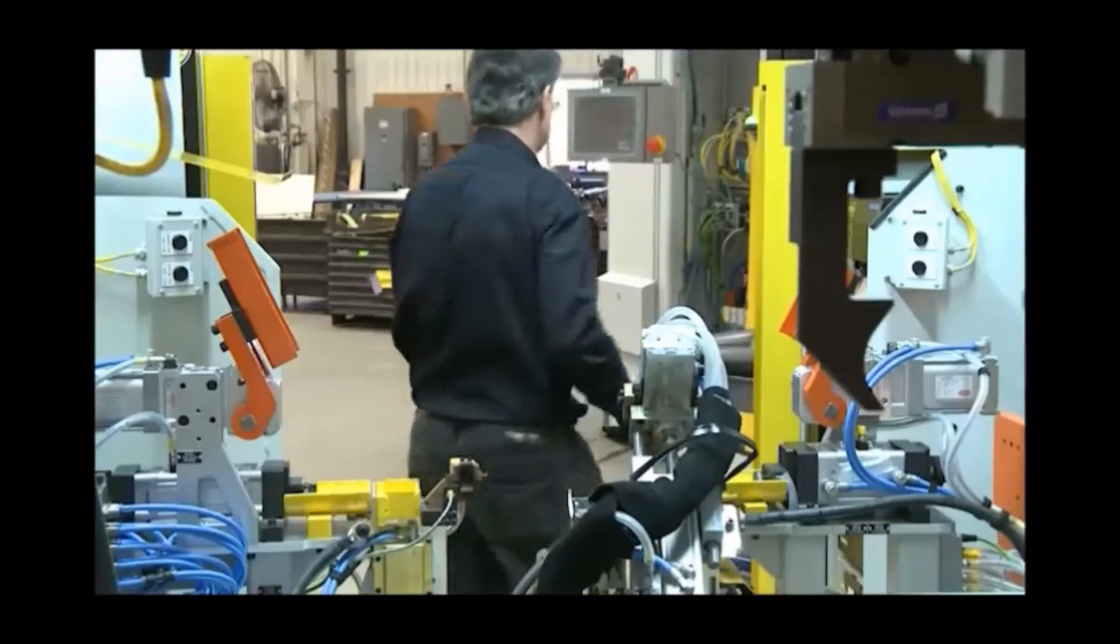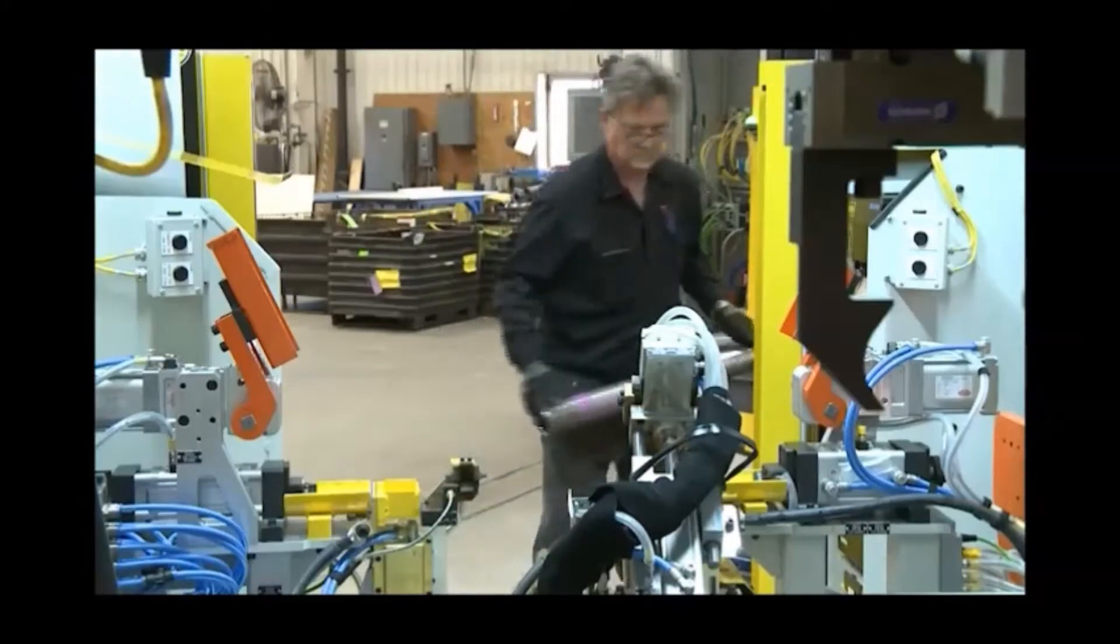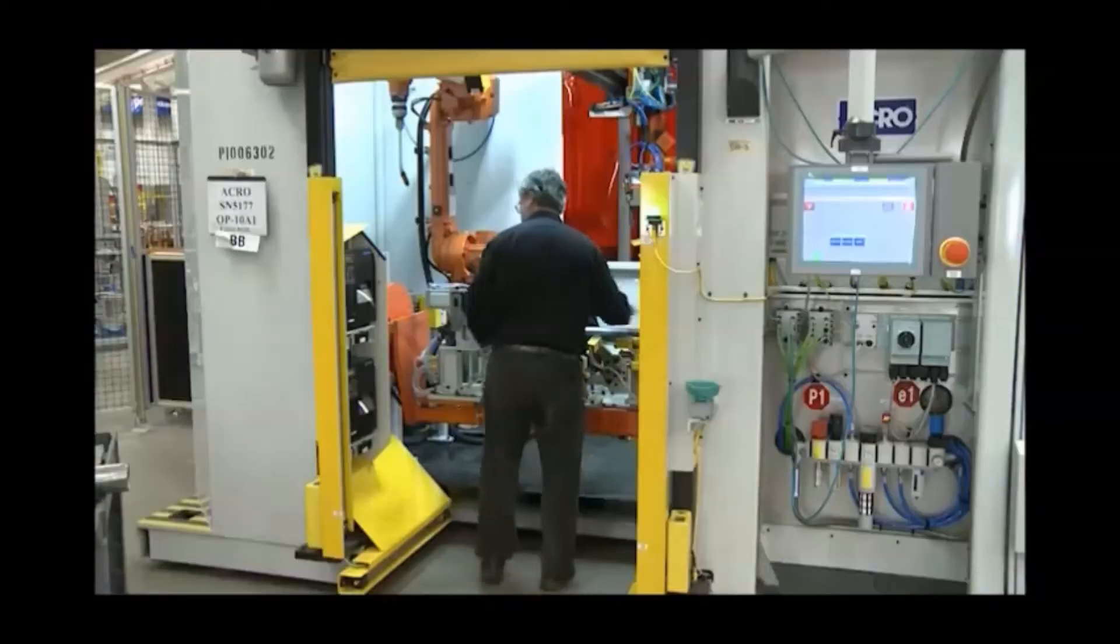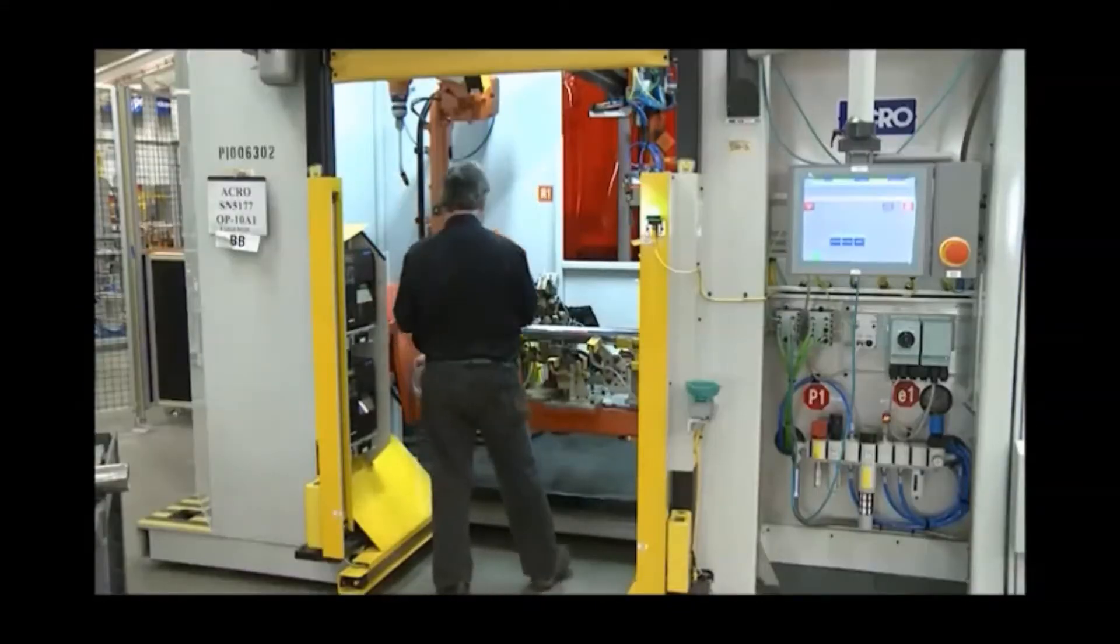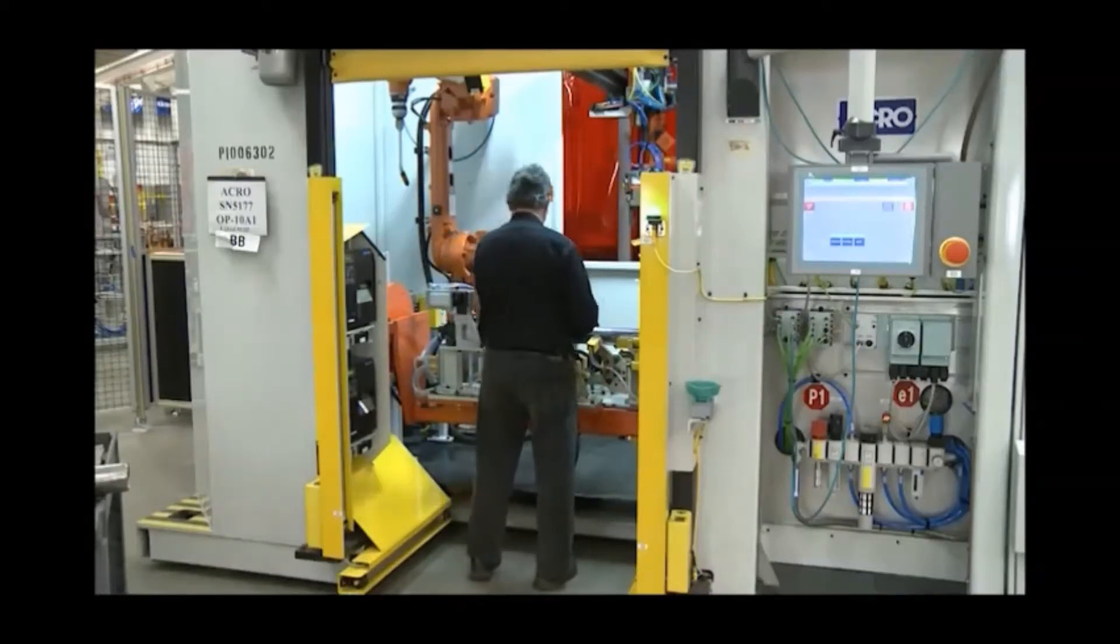An operator is loading component parts into the OP10 welding fixture. A barcode label is placed onto the tube for complete part traceability throughout the welding line.